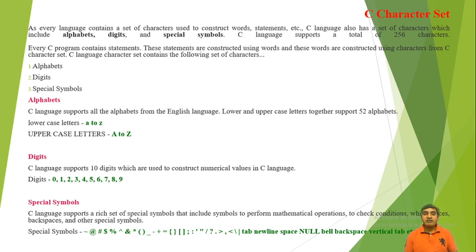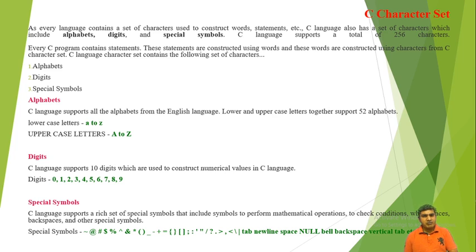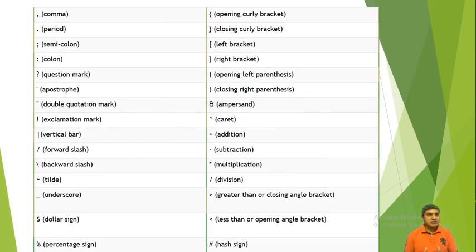Special symbols: C language supports a rich set of special symbols that include symbols to perform mathematical operations, to check conditions, white space or blank space, and other special symbols. These symbols may be used to perform arithmetic operations such as addition, subtraction, multiplication and division, or logical operations. The special symbols include: comma, period, semicolon, colon, question mark, apostrophe, double quotation mark, exclamation mark, vertical bar, forward slash.